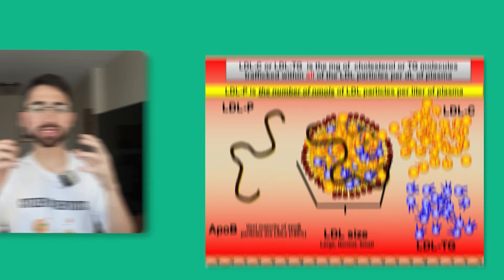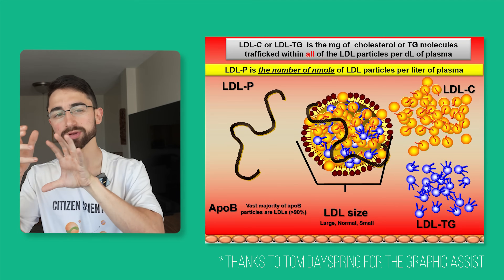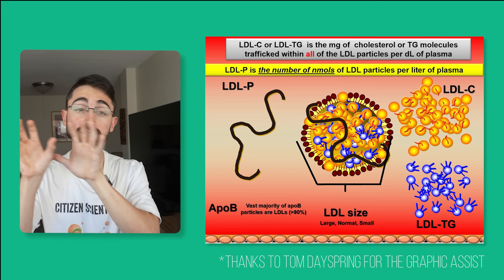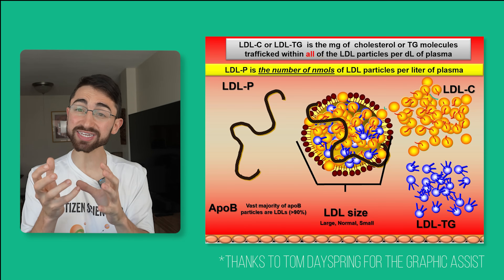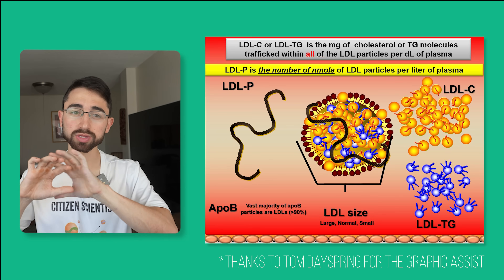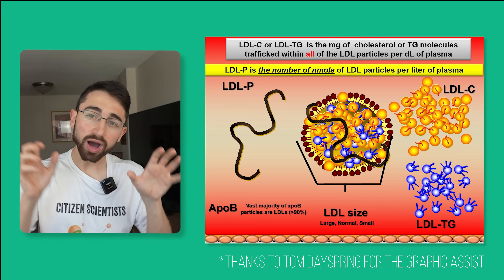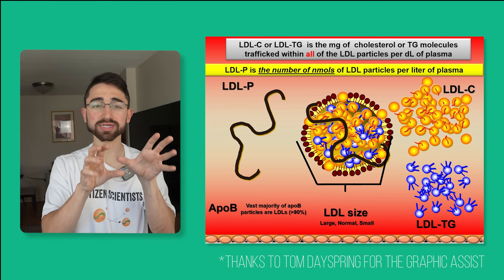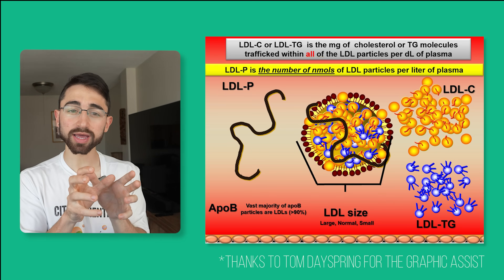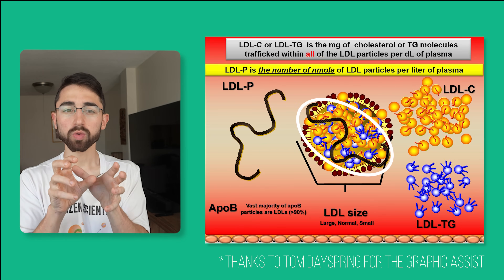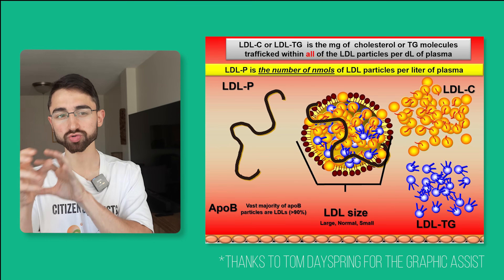First, for a tiny bit of background, I want to distinguish ApoB from a related measure, LDL cholesterol. ApoB is a lipoprotein, and ApoB-containing lipoprotein particles are the family of lipoprotein particles that include LDL particles. LDL cholesterol is the cholesterol content of LDL particles, and LDL particles constitute the most common ApoB-containing lipoprotein particles in the bloodstream. When it comes to cardiovascular risk assessment, there's now a trend towards focusing on ApoB as opposed to LDL-C, since ApoB is a marker of LDL particle number, which is better than LDL cholesterol, which is cruder.